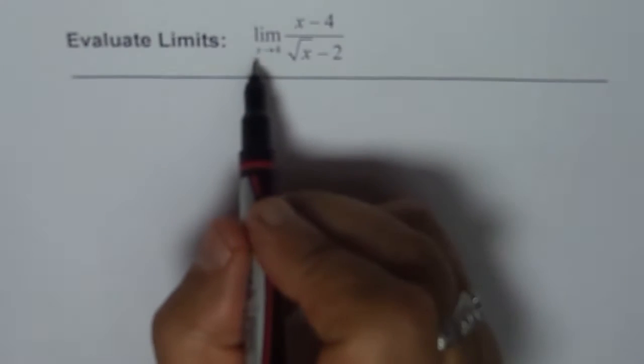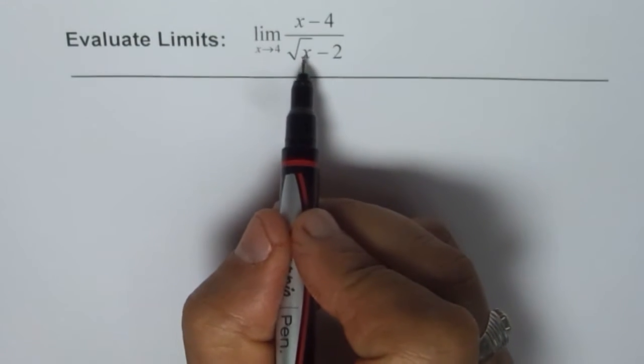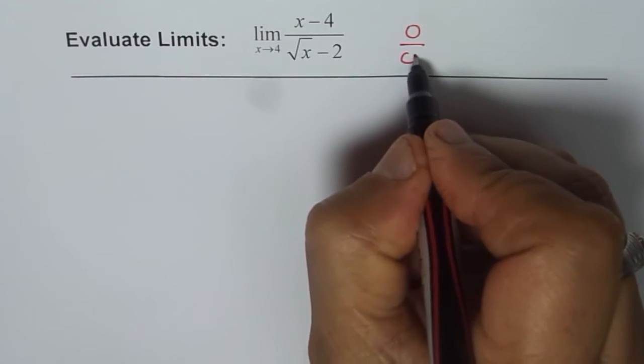If I substitute 4, then I get 4 minus 4 which is 0. Square root of 4 is 2, and 2 minus 2 is 0. So it is of the form 0 over 0.